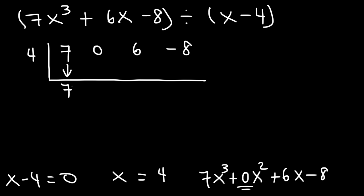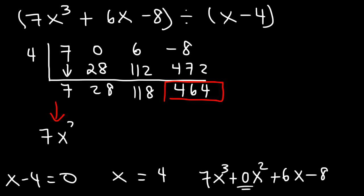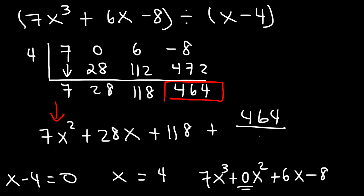Bring down the 7. 4 times 7 is 28. 0 plus 28 is 28. 4 times 28 — that's 112. 6 plus 112 is 118. 4 times 118: 4 times 100 is 400, 4 times 10 is 40, 4 times 8 is 32, so 400 plus 72 is 472. Negative 8 plus 472 is 464, and that is the remainder. 7x cubed divided by x is 7x squared, so the answer is 7x squared plus 28x plus 118, plus the remainder 464 divided by x minus 4.